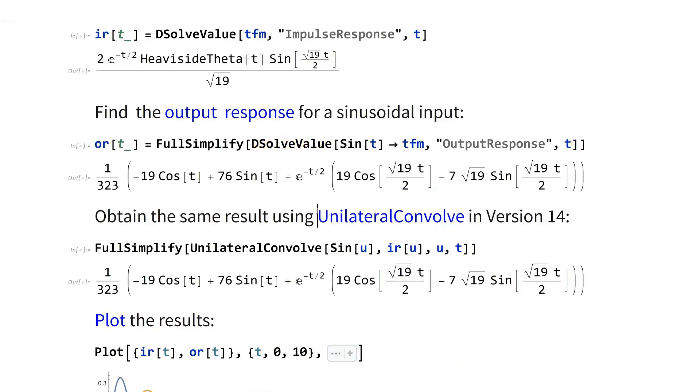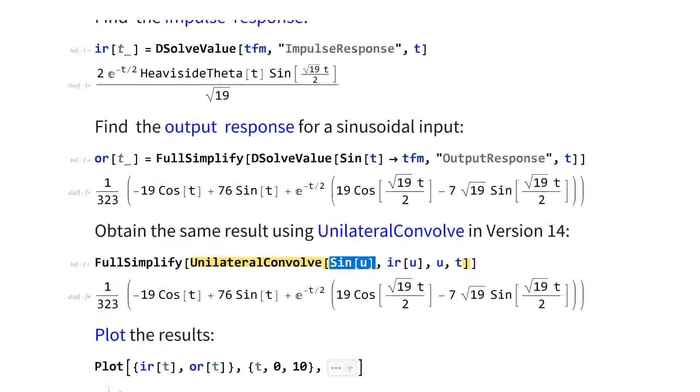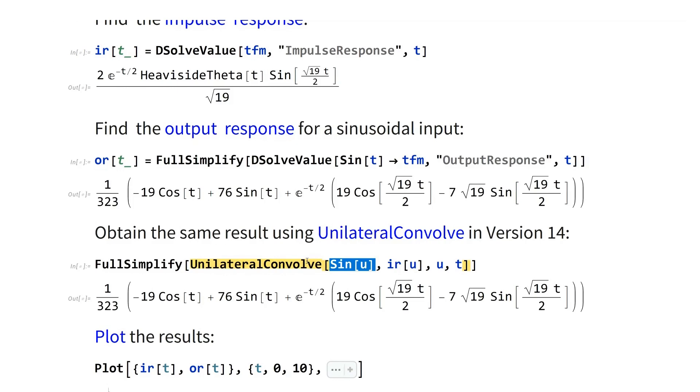So it's exactly mirroring the behavior in Laplace space. We have a new function called UnilateralConvolve in version 14, which will let you do it. So the idea is you take the input, you take the impulse response which you just found out, and lo and behold, the answer which you get is exactly the output response for that input.